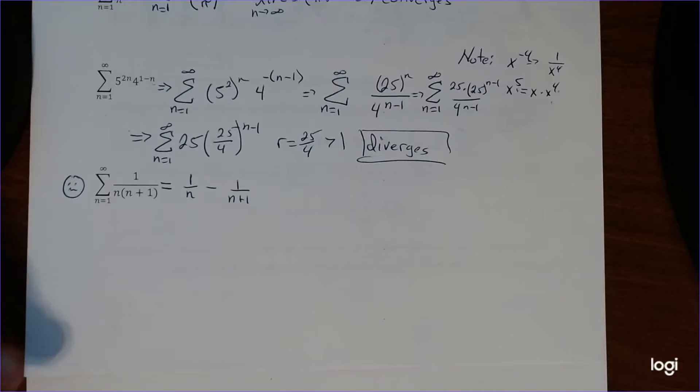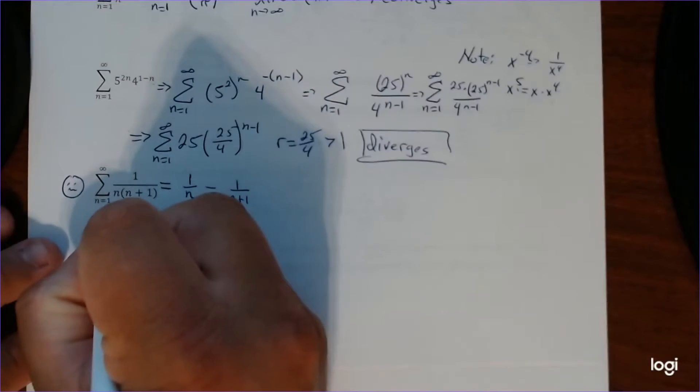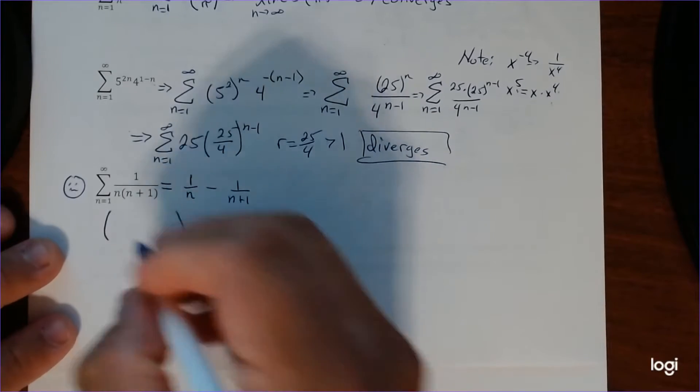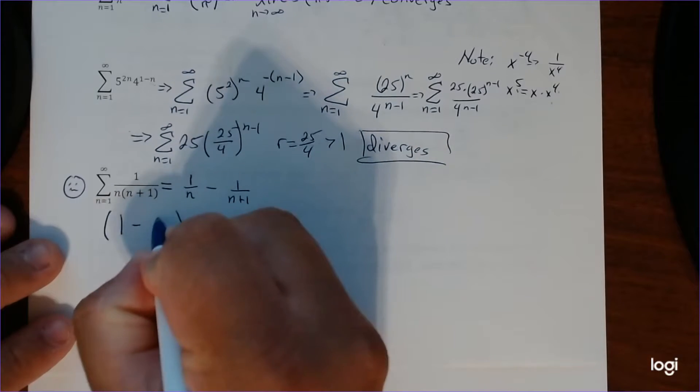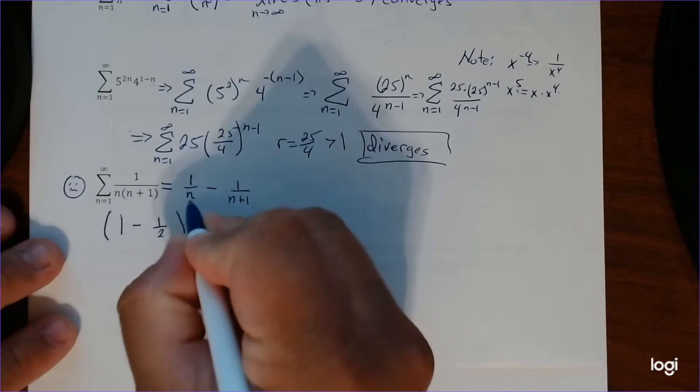Now, what happens if we just take the sum? Meaning if I just plug in numbers and see. So for instance, if n equals 1, I get 1 minus 1 half. If n equals 1, that's your first term, A sub 1.